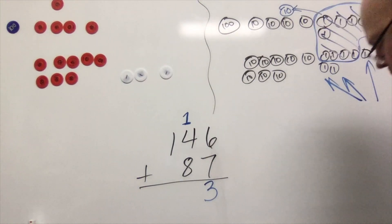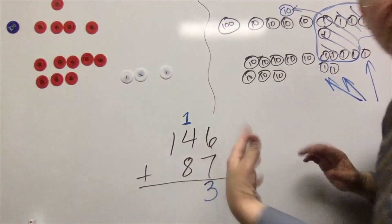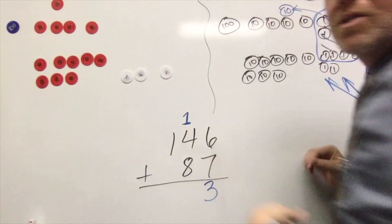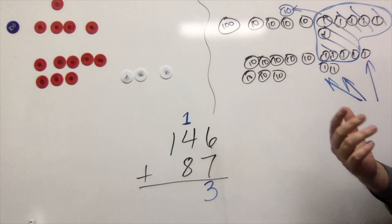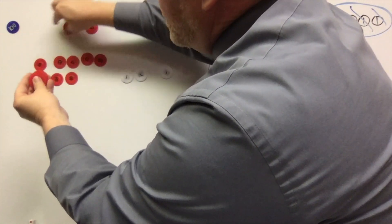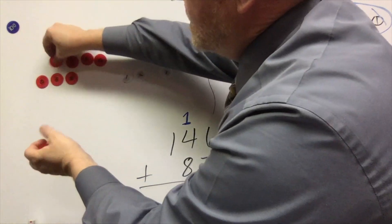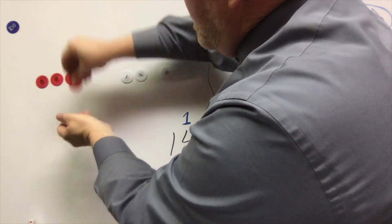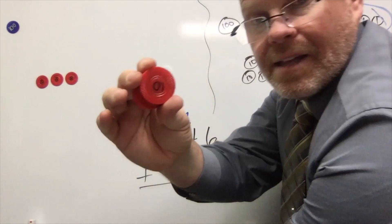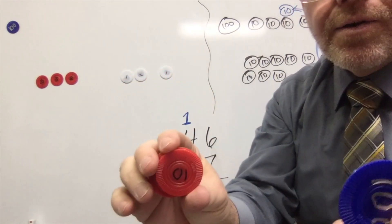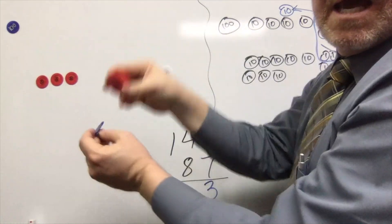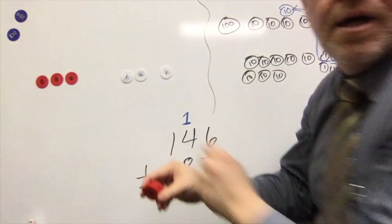Now we're going to do the same thing with the tens. Let's add up all the tens. We have eight here, plus four here, plus one more — so that gives us 13 tens. We know that we can cash in ten of those: one, two, three, four, five, six, seven, eight, nine, ten. So we can cash in these 10 tens for a hundred. There it is — 100. I'm going to take these 10 tens and exchange them for a brand new hundred.